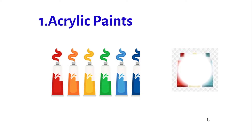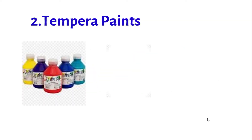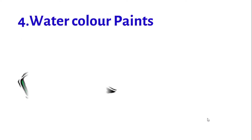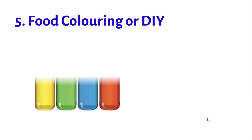There are a few types of paints that are both safe and easy for kids to use. They are acrylic paints, tempera paints, washable paints, watercolor paints, food coloring or DIY paints, and fluid paints. Children, let us quickly run through them one after the other.